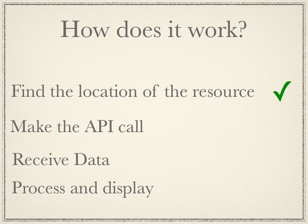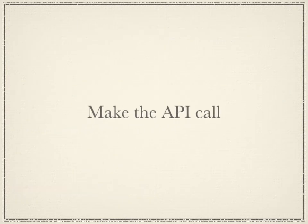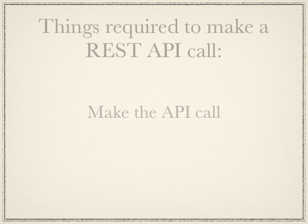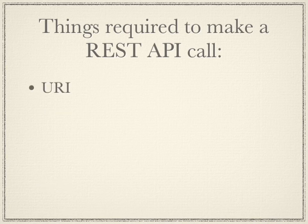You can find information for all public APIs by going to their respective website — they usually have decent documentation on what you need to access a certain API. With that in mind, I'm going to teach you how to make the API call. The things required to make a REST API call are: a URI — for example, api.twitter.com/1/statuses/public_timeline — and an HTTP method.